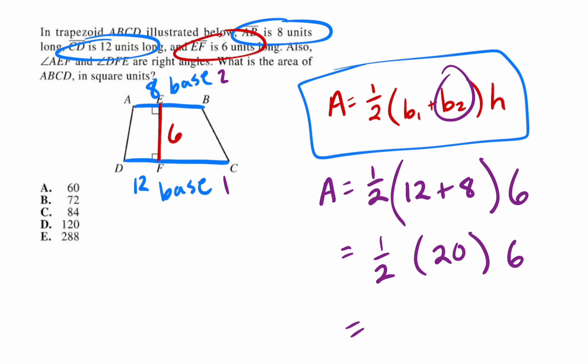However you want to multiply these is fine. You could also do 20 times 6 and then divide that by 2, because that's the same thing as multiplying times a half. Really, however you want to multiply and simplify is up to you.